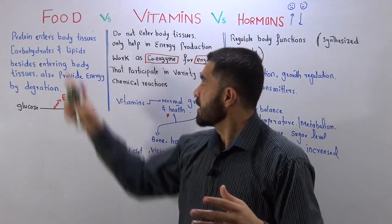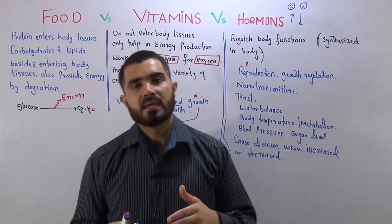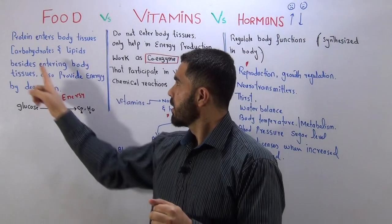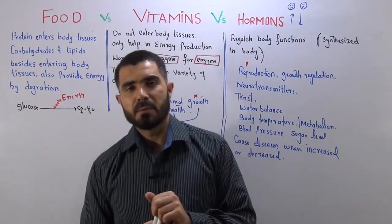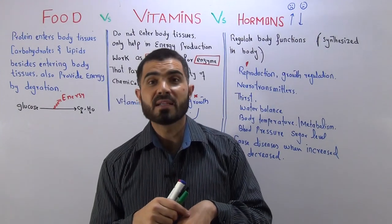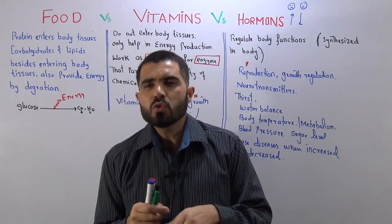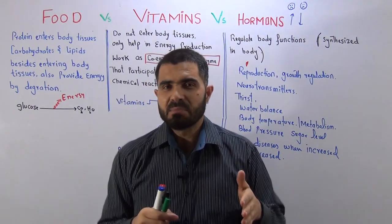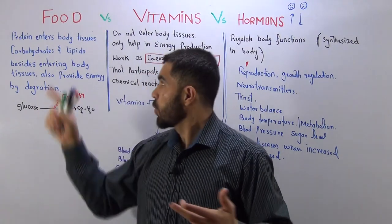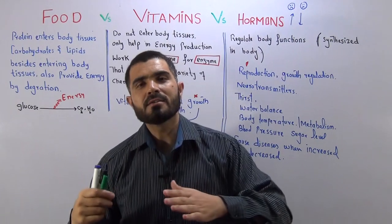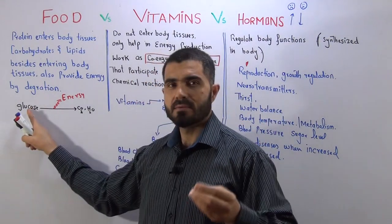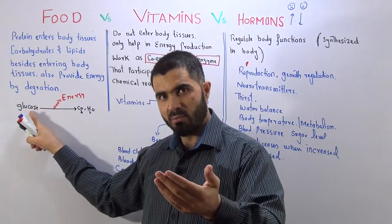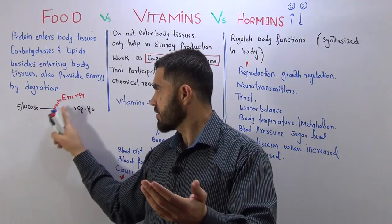This is comparison number one. If you see inside food, you will see some other items like carbohydrate and lipids. Carbohydrate and lipids, beside their role as a part of body tissue, they also release energy when they are broken down in the body, means they are degraded. When the carbohydrate and lipids degrade, they release energy. Just like example: glucose is a carbohydrate. When it is broken down into carbon dioxide and water, energy is released.